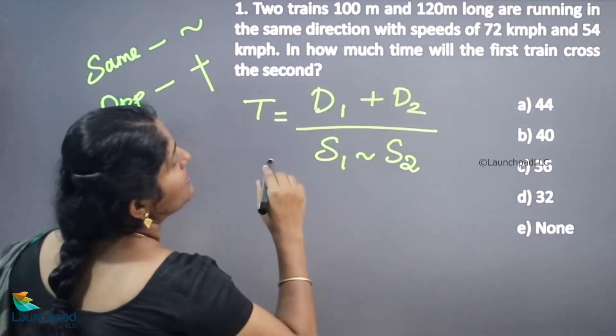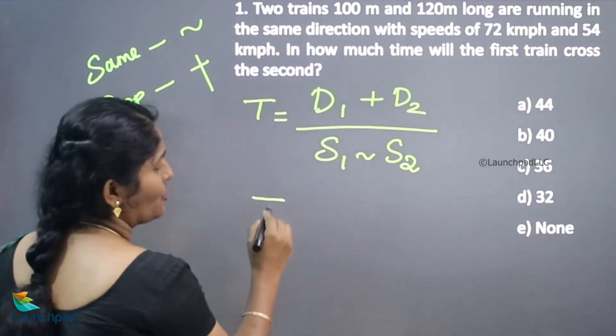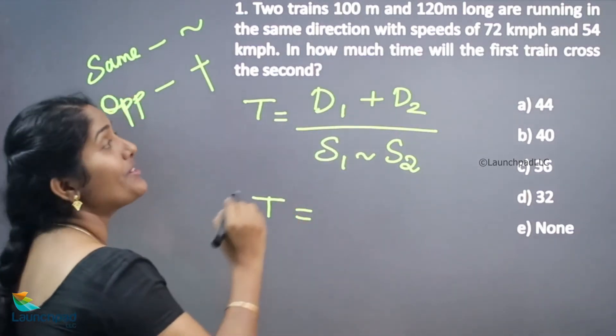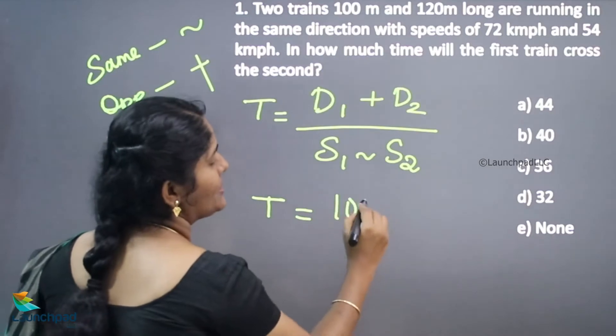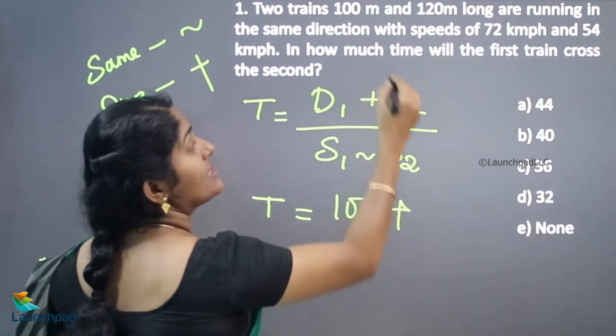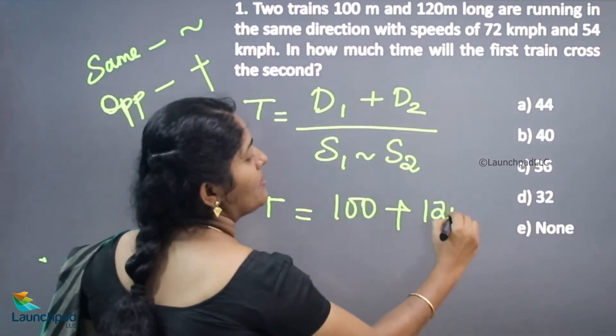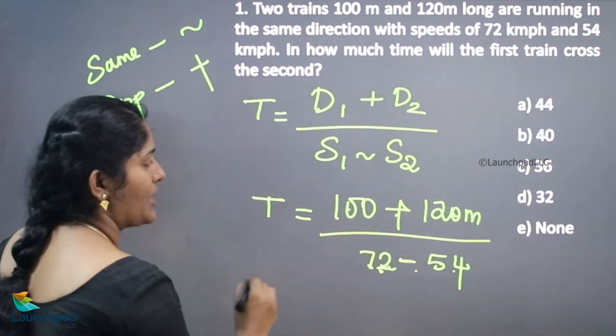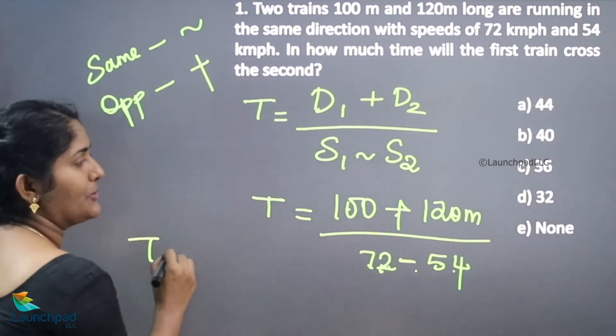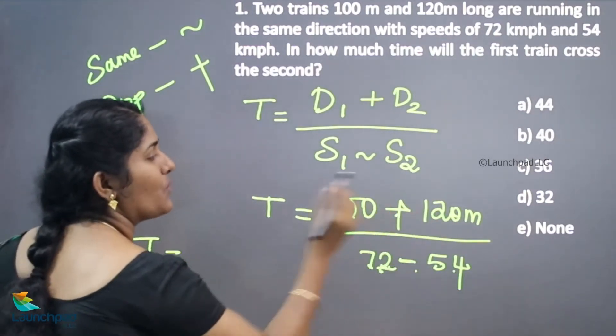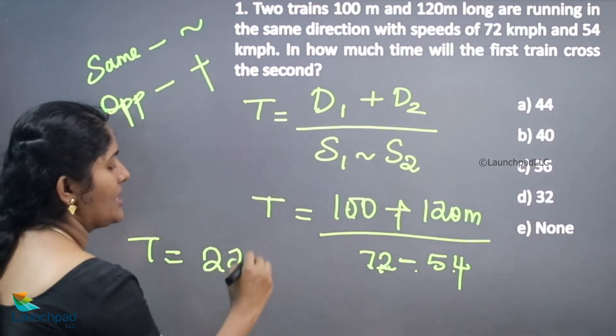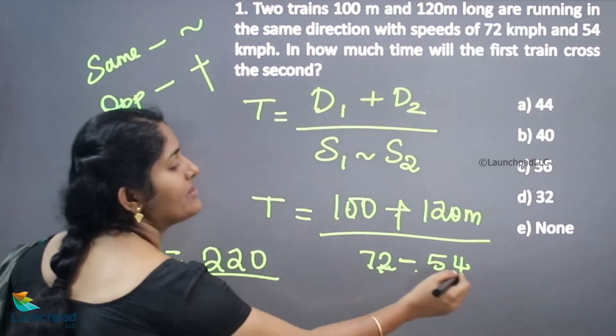So what is your time here? We should calculate that only. What is the distance here? 100 meter plus what is the distance of second train, 120 meter. Therefore time is equal to 100 plus 120, 220 divided by what is the difference in the speed?